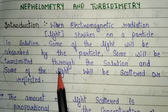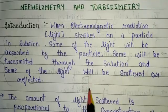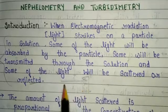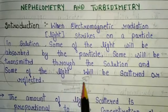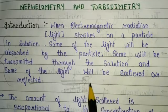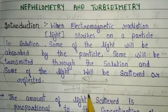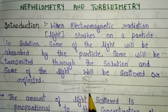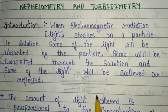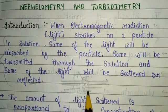In this concept, nephelometry and turbidometry work. Basically, we take a sample which is made from particles. When electromagnetic radiation or light strikes on that sample particle, some of the light is absorbed by that particle, some of the light will be transmitted through the particles, and some of the light will be scattered in different angles by the particles.